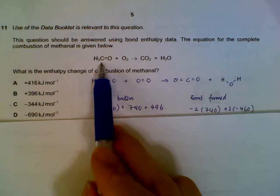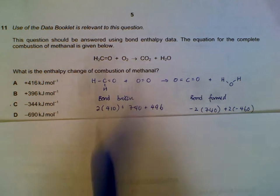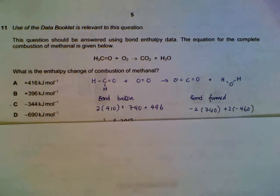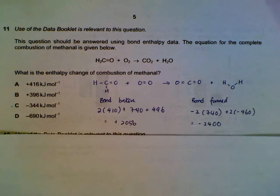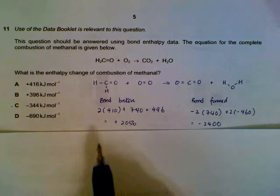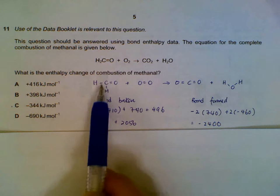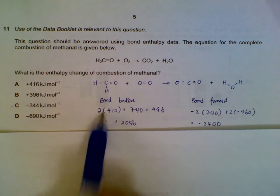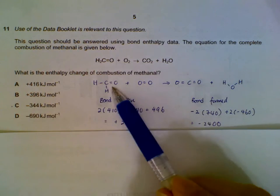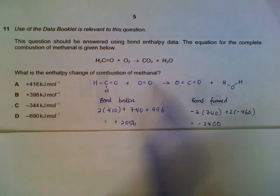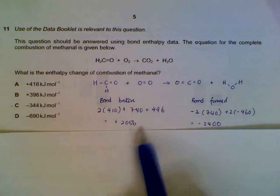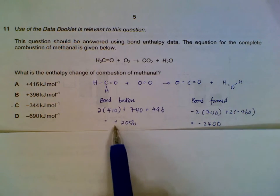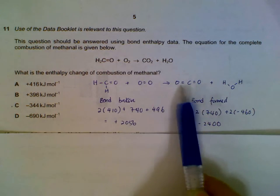Number eleven: we have a combustion reaction and need to find the enthalpy change of combustion using bond energy. At the start, we have bonds broken. We refer to the data booklet: each C-H bond is 410, so 410 times 2, and 740 for C=O. Oxygen broken is 496. This is the total energy broken or required to break bonds—it's endothermic. Forming bonds, we refer to the data booklet again: 2 times CO₂, 2 times OH—this is the energy released, exothermic.